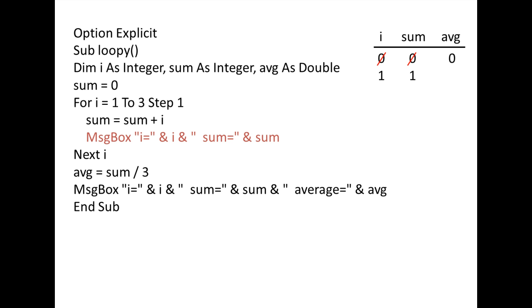A message box then appears that displays the value of i and sum, which are 1 and 1. We then reach the next i statement and increase i by the step size, which is 1. i now has the value of 2. Since i is less than or equal to 3, we go back to the beginning of the loop. Sum is assigned the current value of sum plus i, which is 1 plus 2, so the new value of sum is 3. A message box appears displaying i and sum, which are currently 2 and 3. We reach the next i statement again and increase the value by 1. i now has the value of 3. Since i is still less than or equal to 3, we go back to the beginning of the loop. Sum is assigned sum plus i, which is 3 plus 3. The new value of sum is 6. A message box appears displaying i and sum, which are 3 and 6.